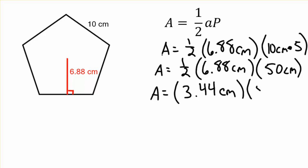I'm going to multiply that times 50 centimeters in my calculator. Remember, centimeters times centimeters is going to give me centimeters squared. 3.44 times 50 is 172, and centimeters times centimeters is centimeters squared.